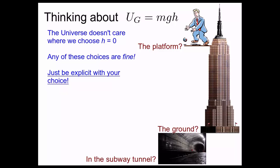So, when you're approaching a problem with gravitational potential energy, explicitly write down that I am going to choose the zero of gravitational potential energy to be the platform, for example.